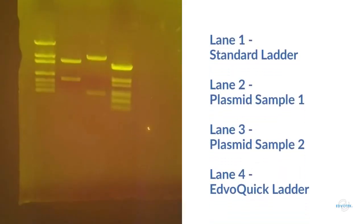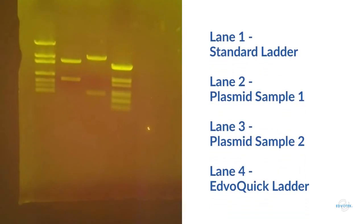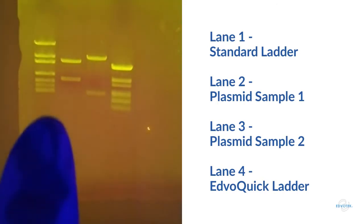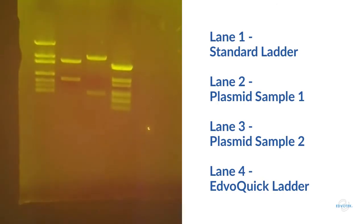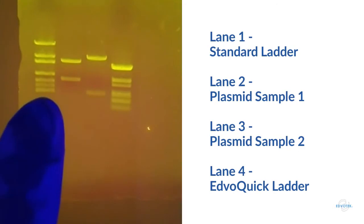So, let's take a look at our gel. Here are the results from our restriction digests of two different plasmids. For our experiment to be a success, we need bands of 3,000 and 1,280 base pairs. So, how do we know which plasmid is the right one? We compare them to our DNA ladder in lane one.